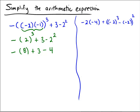No more exponentiation, no more multiplication. So now I'm just going to add or subtract from left to right. Negative 8 plus 3 would be negative 5 minus 4. And minus 4, negative 5 minus 4 is negative 9.